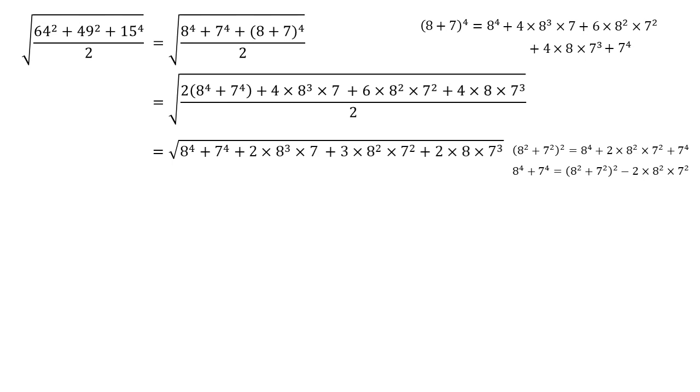Now, if we do that, those two 8 squared times 7 squared will cancel out part of the 3 times 8 squared plus 7 squared. So we'll end up with the square of 8 squared plus 7 squared plus 2 times 8 cubed times 7 plus just the 1 8 squared times 7 squared plus 2 times 8 times 7 cubed.